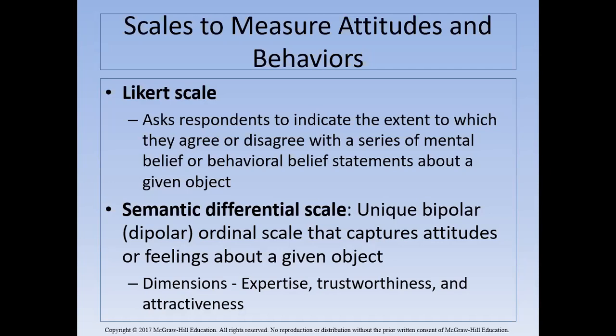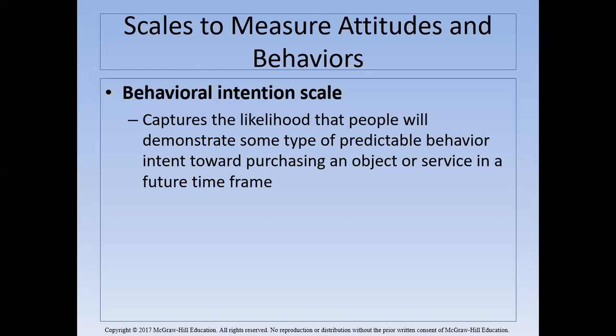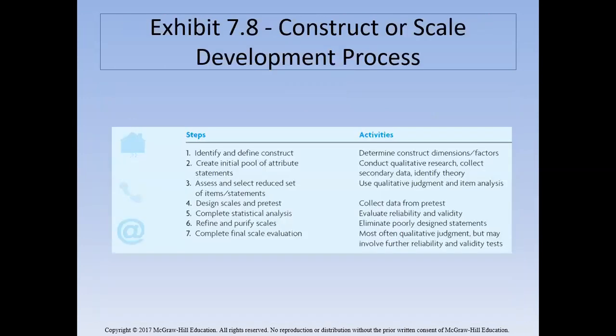The behavioral intentional scale captures the likelihood that people will demonstrate some type of predictable behavior or intent toward purchasing an object or service in a future time frame. Essentially you want to find out whether this person is likely to buy something in the future. You want to see the probability of their purchasing this product, and this can be measured in different ways.